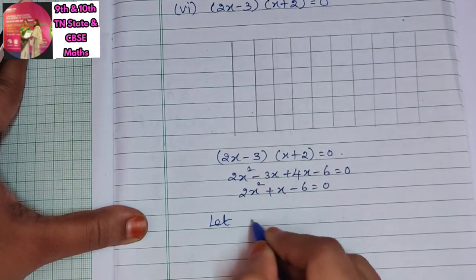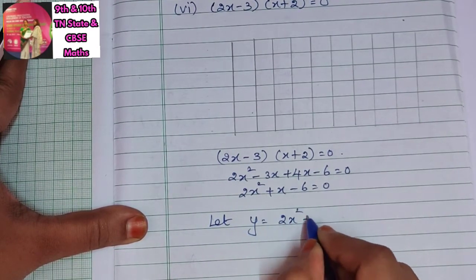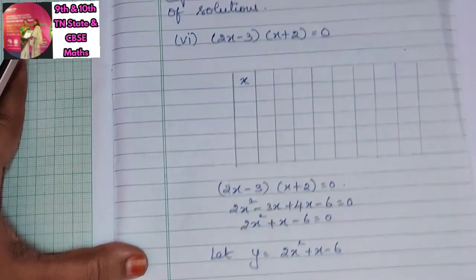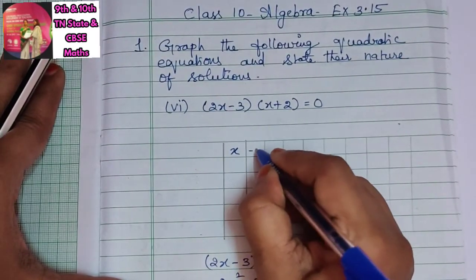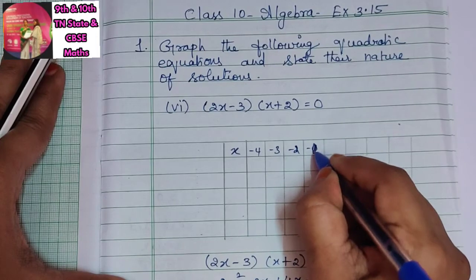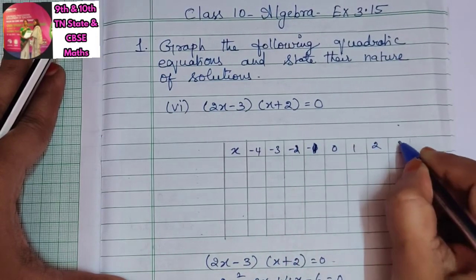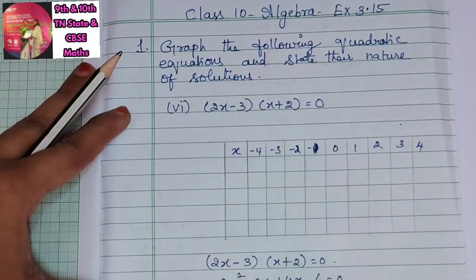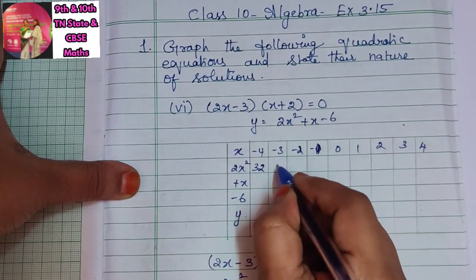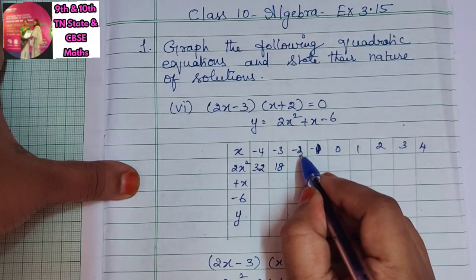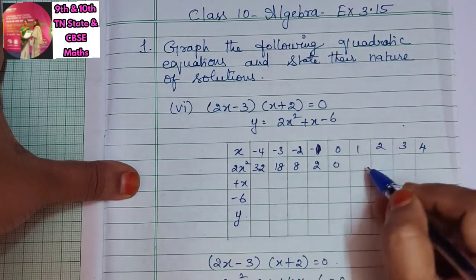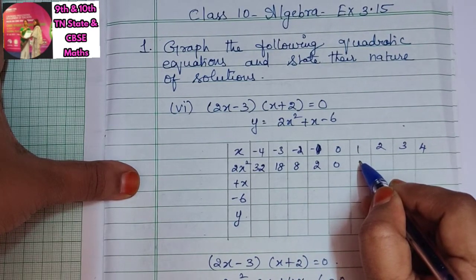Let y = 2x² + x - 6. Now we will take the first few values of x: -4, -3, -2, -1, 0, 1, 2, 3, and 4. The given equation is y = 2x² + x - 6. The table columns will be 2x², then +x, then -6, and finally the y value — whatever we get by adding all these.